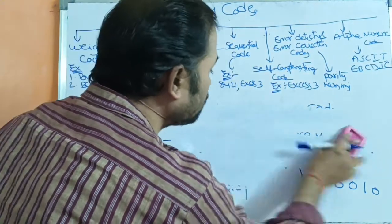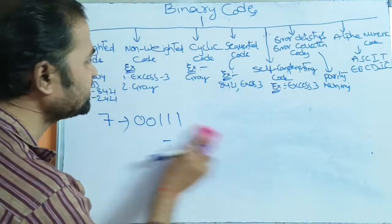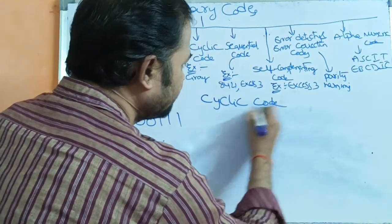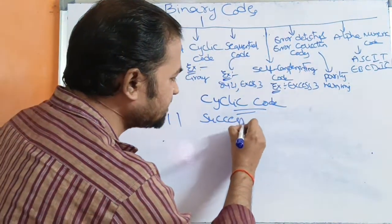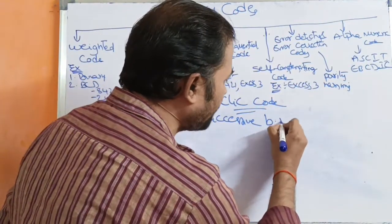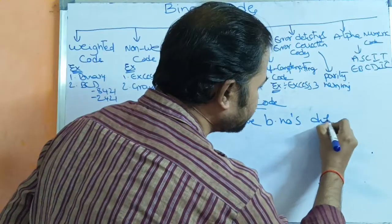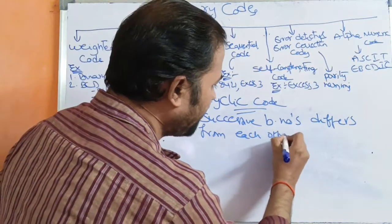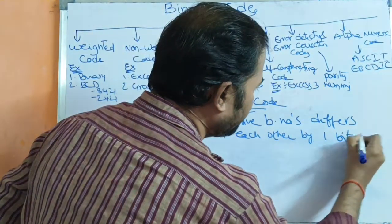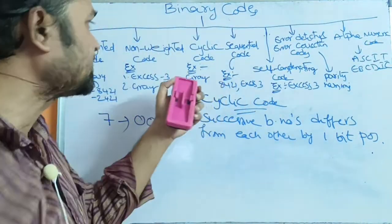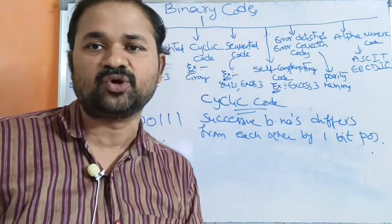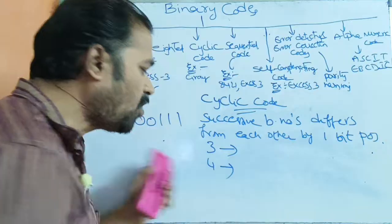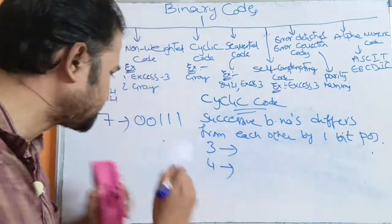Now let us see about cyclic code. Cyclic code means if you take successive binary numbers — successive means continuation one by one — successive binary numbers differ from each other by only one bit position. The best example for cyclic code is grey code. Let us take any two successive numbers. Let us take 3 and 4. How we can represent 3 in binary notation? 3 means 8 4 2 1 notation, so 0 0 1 1.